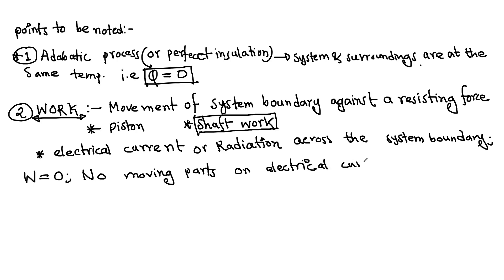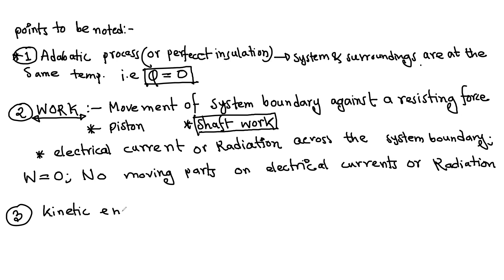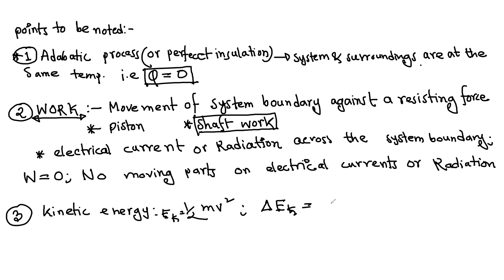Radiation, electrical current, or radiation — these are forms of energy. Kinetic energy: KE is equal to half mv squared. That means if there is no velocity change — if the system is not accelerating — kinetic energy is zero.